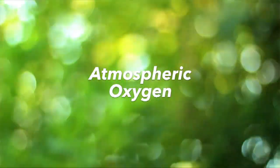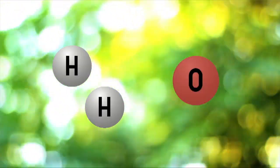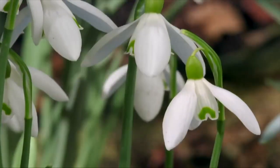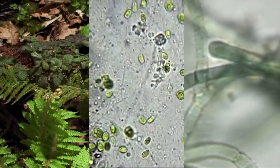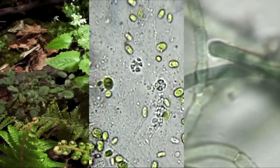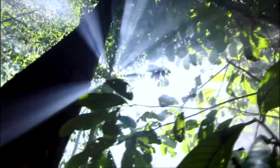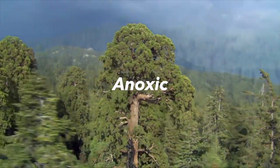Atmospheric oxygen is produced in the breakup of water vapor, where water molecules dissociate to produce hydrogen and oxygen. The hydrogen escapes into space, preventing it from recombining with oxygen. Another source of atmospheric oxygen is photosynthesis. Photosynthetic autotrophs, such as green plants, algae, and photosynthetic bacteria, produce oxygen as a byproduct. This oxygen is then consumed by both autotrophs and heterotrophs. In the early days of planet Earth, the amount of oxygen produced by photosynthetic microbes exceeded the amount taken up in respiration, which transformed the Earth's previously anoxic environment into an oxic one.